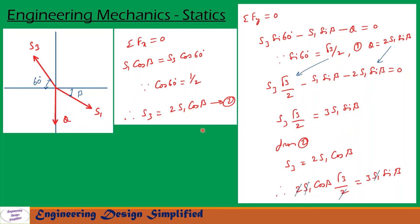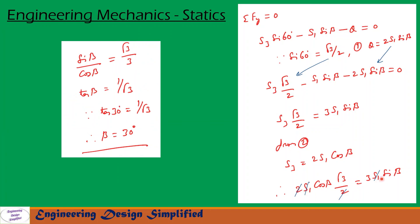From equation 2, S3 equals 2S1 cos beta. Substituting into the simplified equation gives 2S1 cos beta · (√3/2) equal to 3S1 sin beta. The S1 terms cancel and the 2s cancel, giving sin beta / cos beta equal to √3/3. Since sin beta / cos beta is tan beta, we get tan beta equal to 1/√3. We know that tan 30 equals 1/√3, so beta equals 30 degrees.